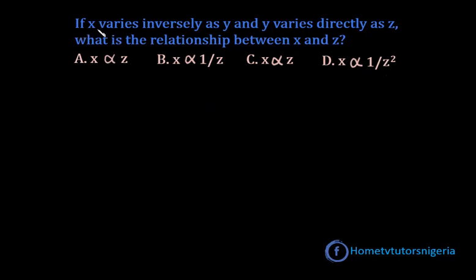And the question goes thus: If X varies inversely as Y and Y varies directly as Z, what is the relationship between X and Z? Let's go to the question over again.